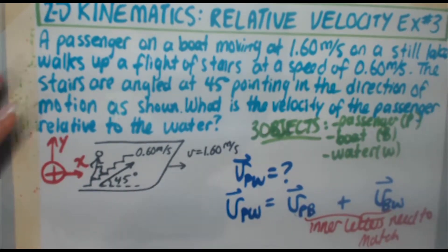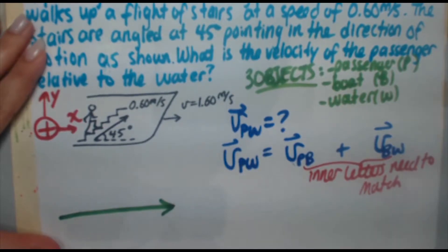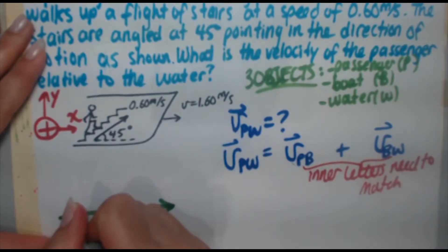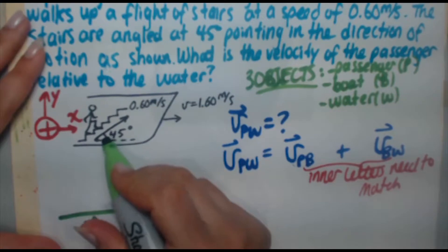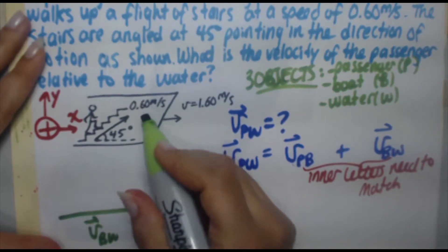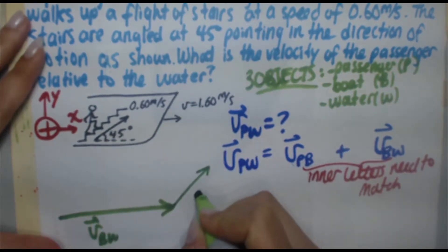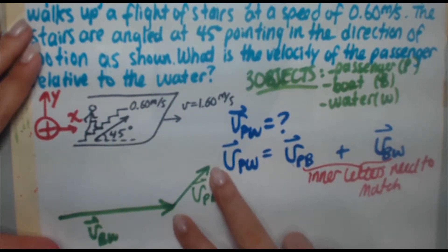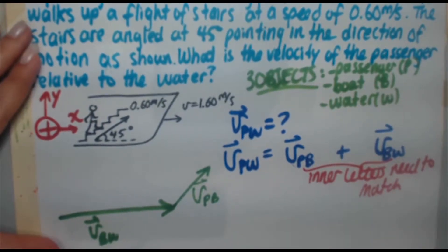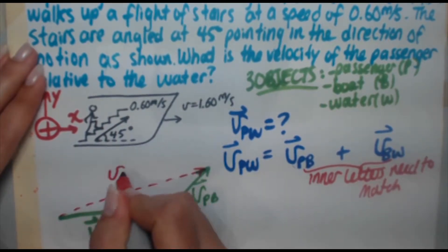The boat is moving at 1.60 meters per second — this is essentially a vector representing the velocity of the boat relative to the water. While the boat moves forward, the person is moving up the stairs relative to the boat at 0.60 meters per second at a 45-degree angle. The question asks for the velocity of the passenger relative to the water. To an outside observer, the path of the person combines both motions — that resultant vector is V-P-W.